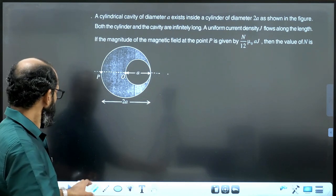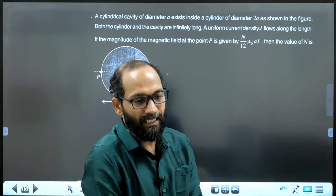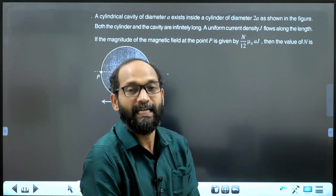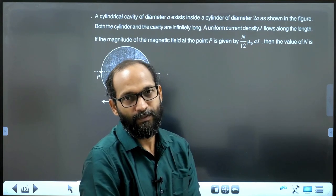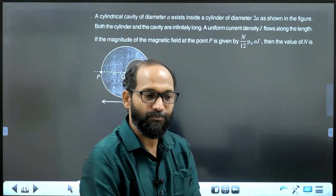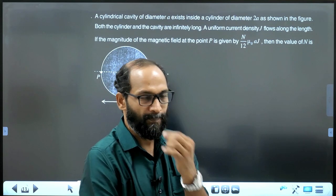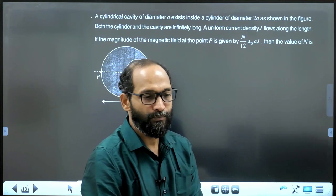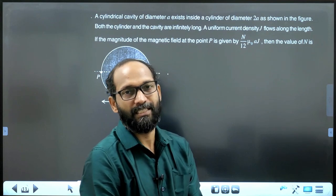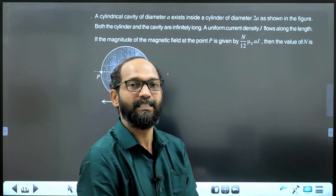Here, we have to find field at the point P, when the cylindrical cavity of diameter A is removed, as shown in this picture, from another uniform cylinder, whose diameter is 2A. Here current density is a constant, but current flowing through any cross section having different area is not a constant. Current density is a constant.